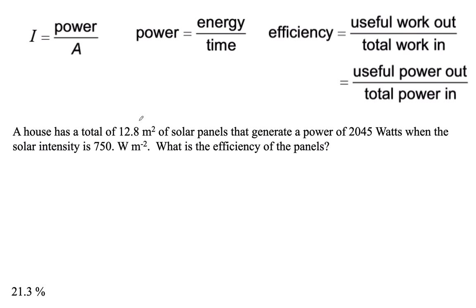All right, let's look at this. A house has a total of 12.8 square meters of solar panels that generate a power of 2,045 watts when the solar intensity is 750 watts per square meter. What's the efficiency of the panels?